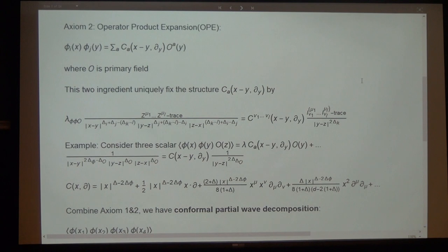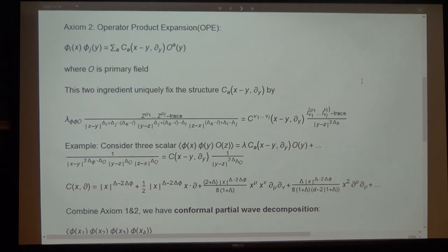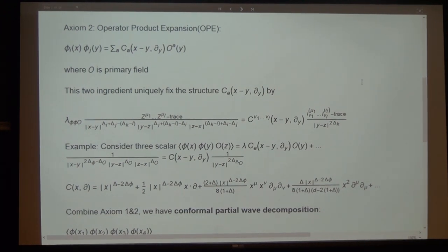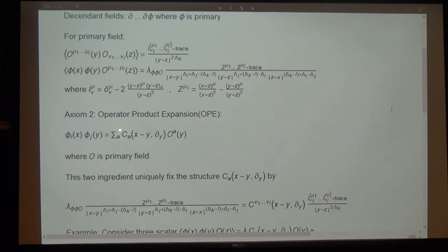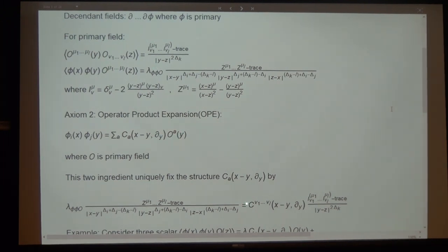On the right-hand side of the OPE, you have all possible fields — primary and descendant. But in CFT, the relative coefficient between the primary field and the descendant is uniquely fixed by conformal symmetry. You can fix them by plugging this term in here: on the right-hand side you have this C structure acting on O from both sides, which becomes a two-point function.